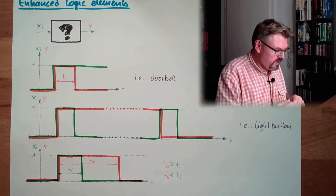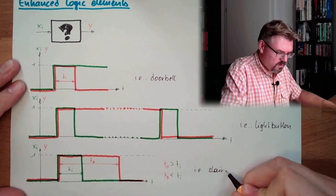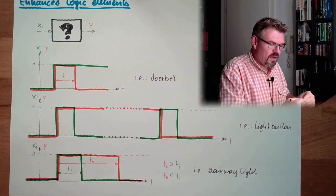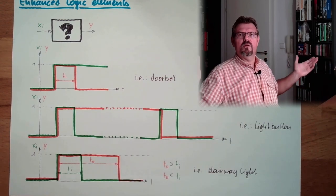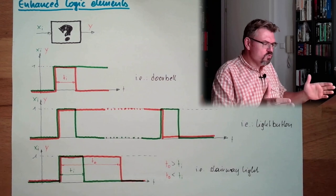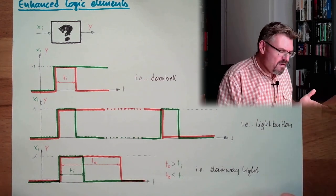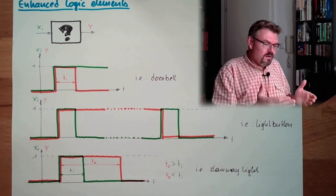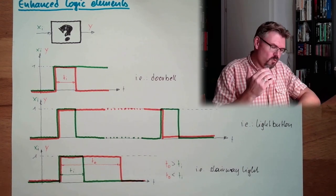So this would for instance be a stairway light. We press a button, then the light turns on. And after a certain amount of time, the light will automatically be switched off. Because in a stairway in a big building, nobody cares about turning it off, so it will automatically be turned off. And those things are not too exotic. We found everyday examples for every of these things immediately.